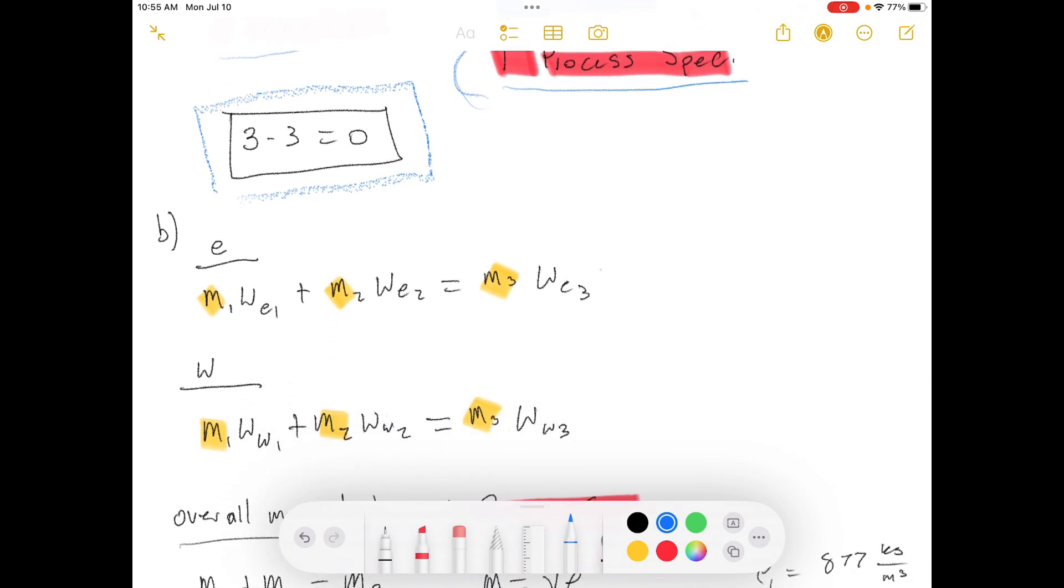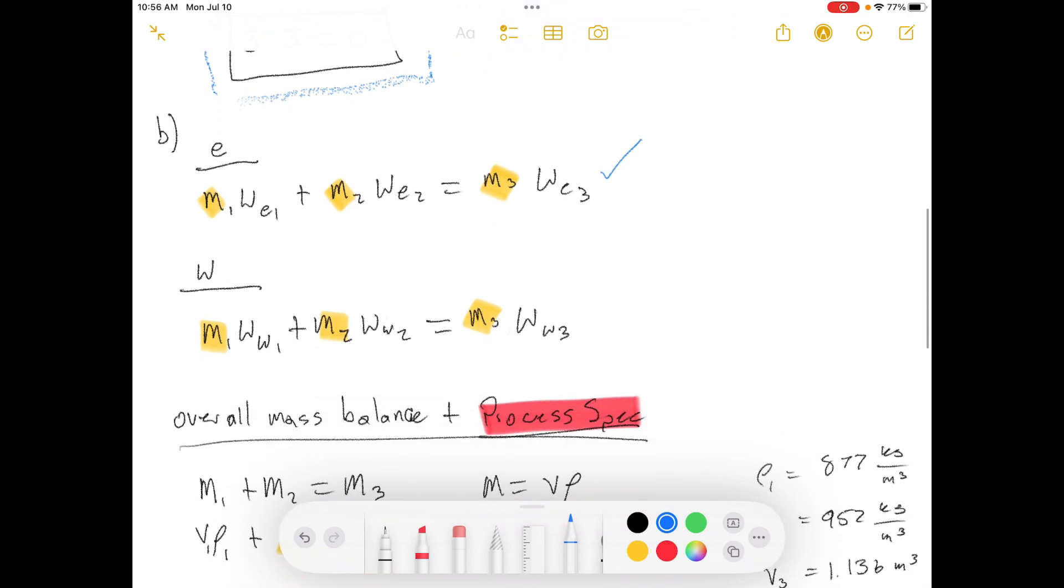We've got one independent equation here, this is our ethanol material balance, and then we've got our second independent equation here, this is our water material balance.